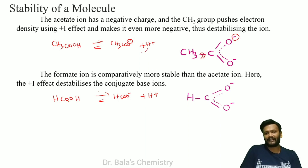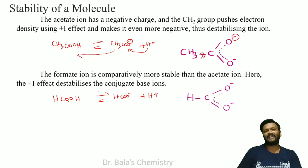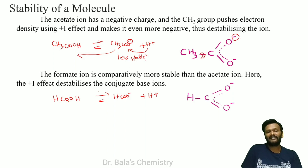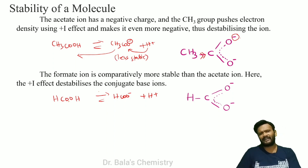The extra electron density will attract the H⁺ positive charge back, causing a backward reaction to reform acetic acid. That makes the acetate ion less stable — it is less stable or unstable.